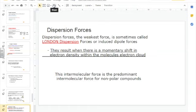The first type we're going to talk about is London dispersion. They result when there is a momentary shift in electron density within the molecule's electron cloud.